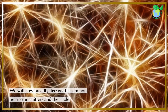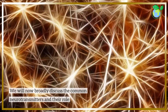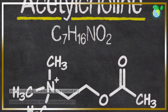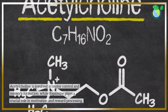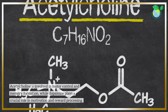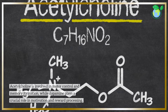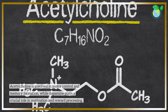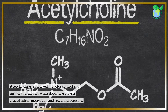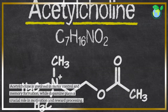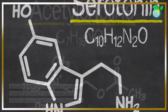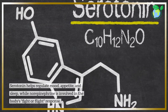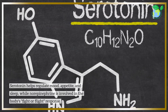We will now broadly discuss the common neurotransmitters and their roles. Acetylcholine is involved in motor control and memory formation, while dopamine plays a crucial role in motivation and reward processing. Serotonin helps regulate mood, appetite, and sleep.